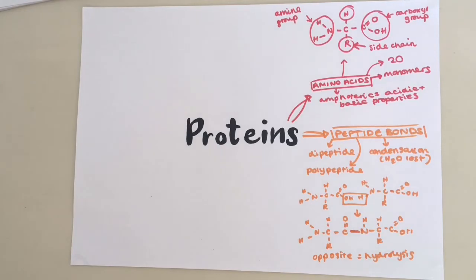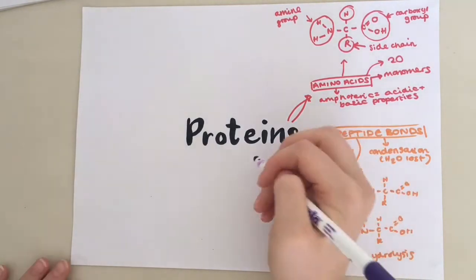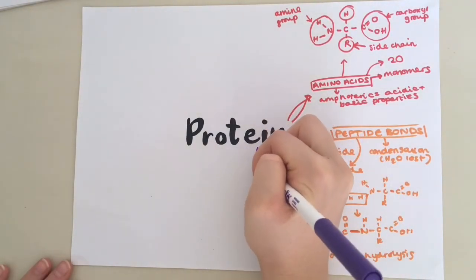There are four different structures of protein. There's primary, secondary, tertiary and quaternary. First, we will look at primary structure.